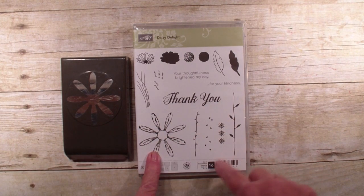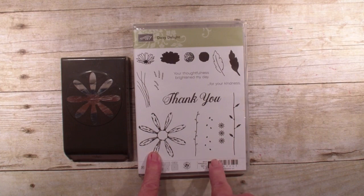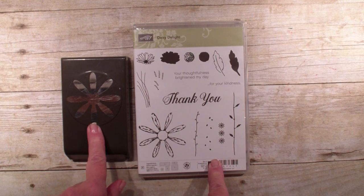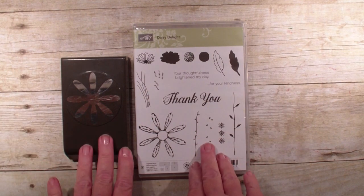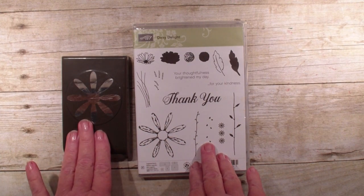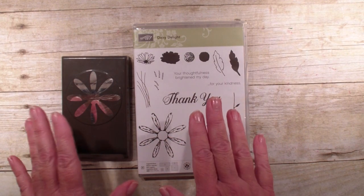The Daisy Delight is a stamp set, 16 photopolymer stamps, and the beautiful Daisy Punch. I have to admit, when I first saw this, I thought, I do not need another flower punch. I have lots of flowers, but this flower is so different.